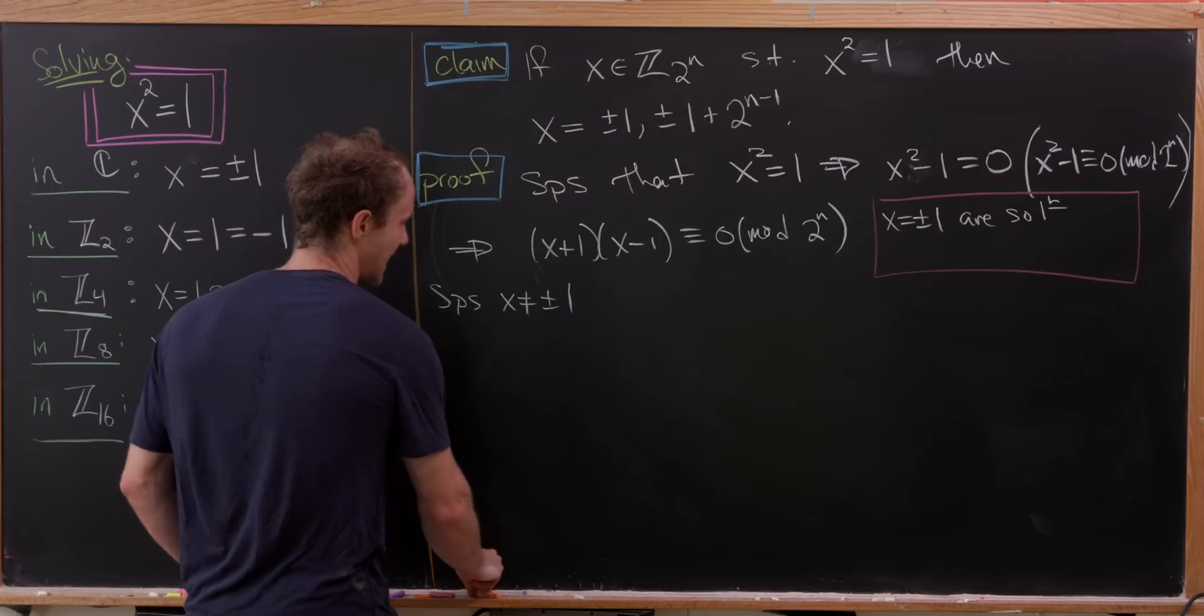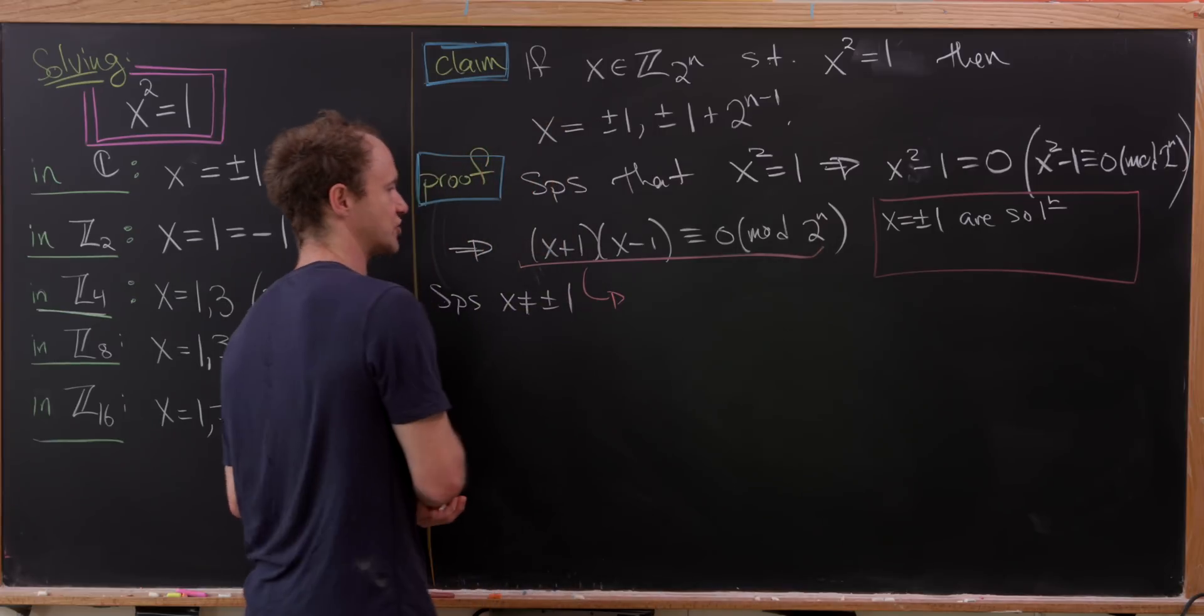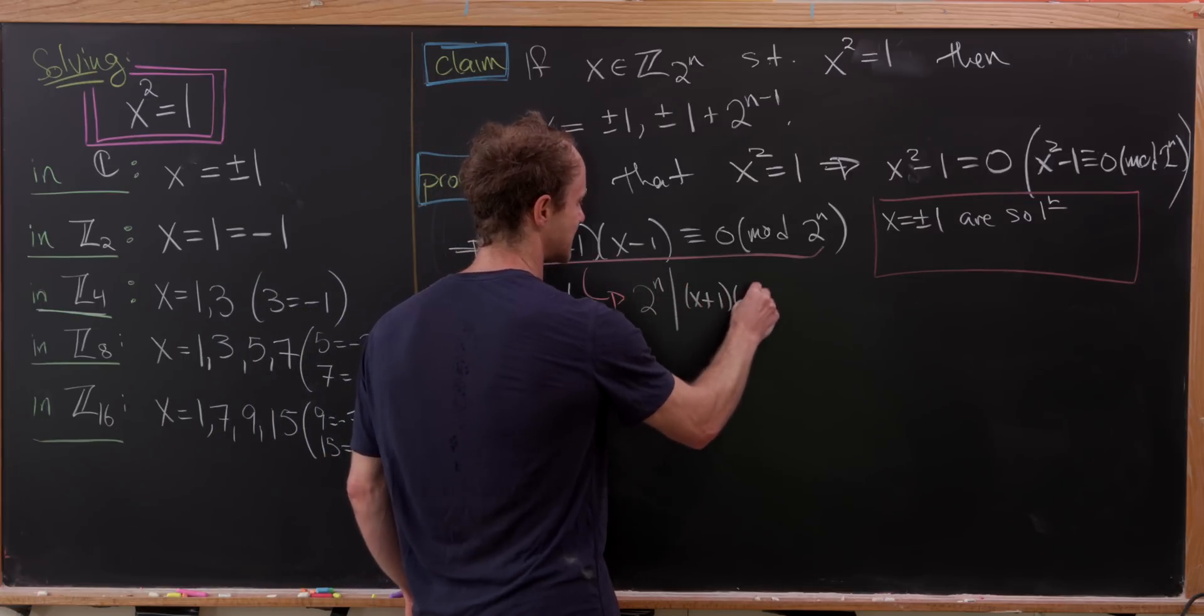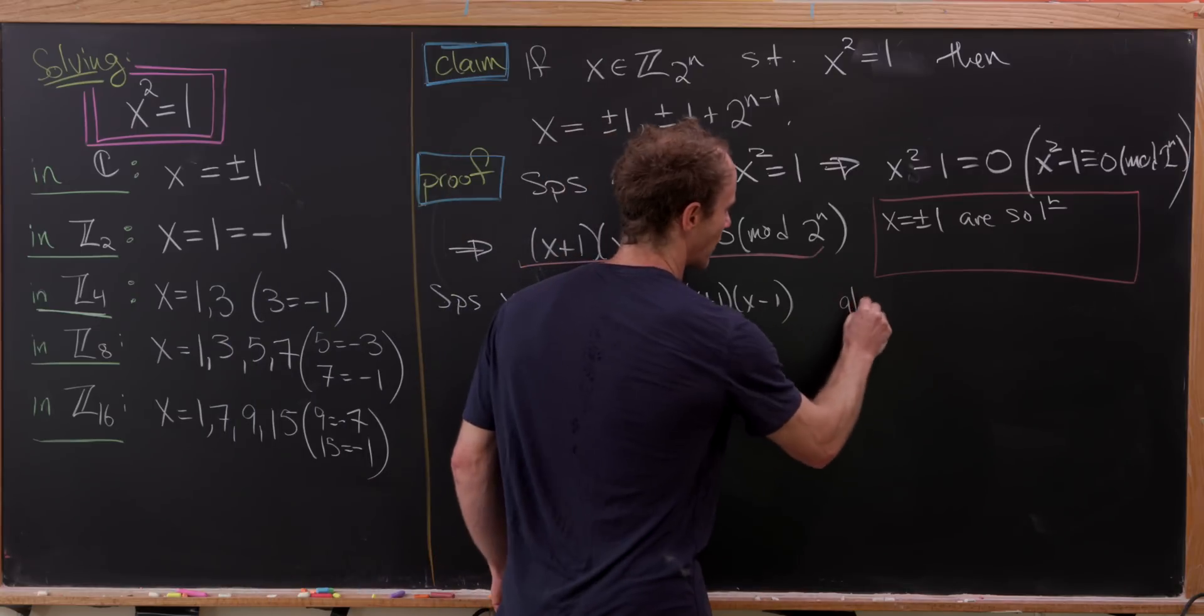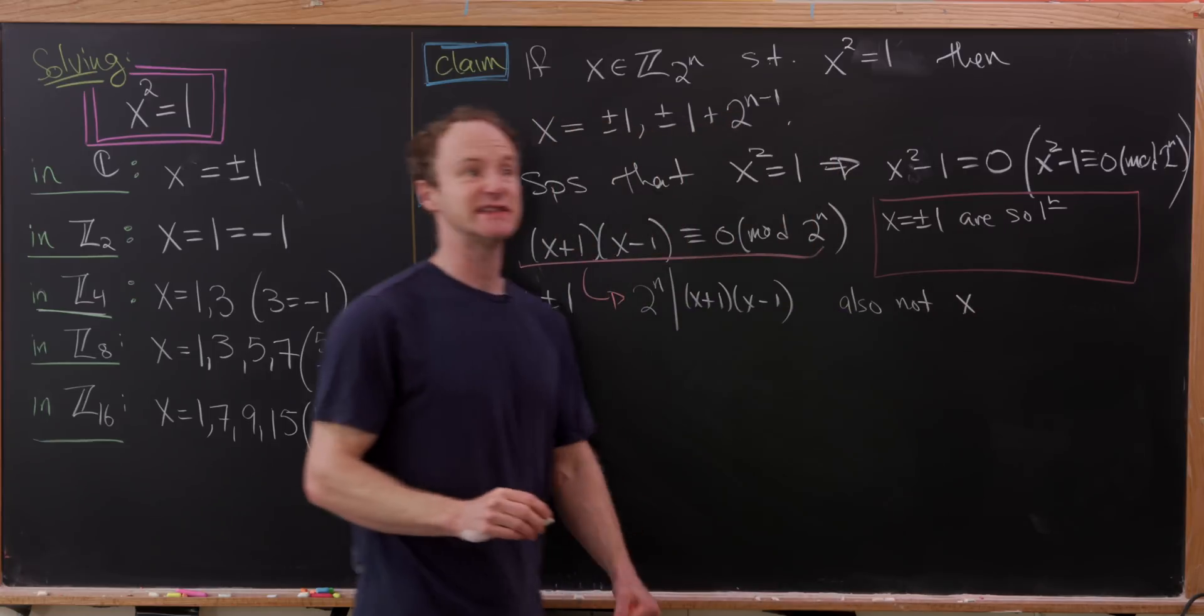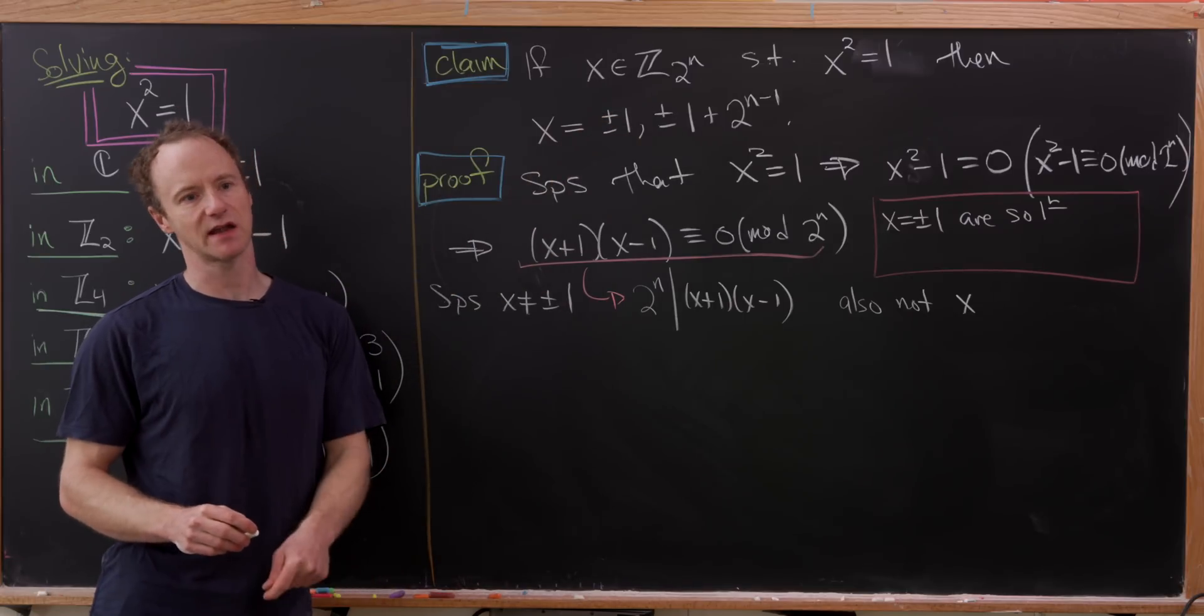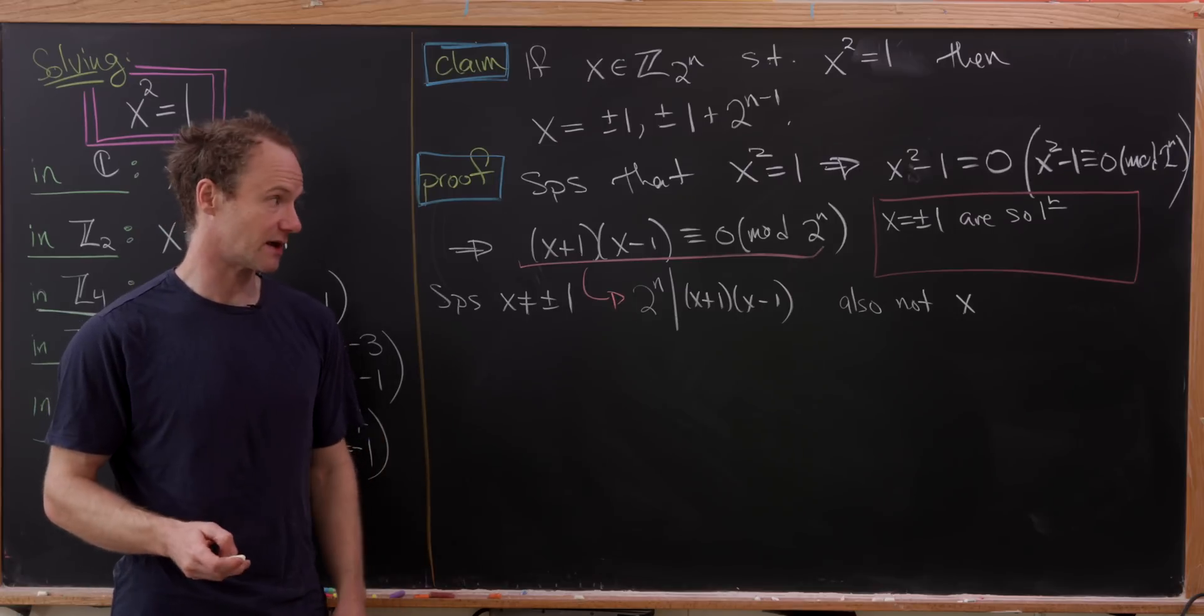Okay, so now we can take this line right here, this congruence relationship, and recall that that's equivalent to saying that 2ⁿ divides (x+1)(x-1). And then maybe furthermore, let's also note that x is an odd number. That's because it squares to the number 1. And well, even in ℤ₂ⁿ, if you square to the number 1, you must start out being an odd number.